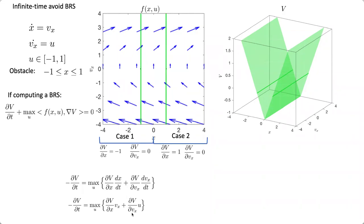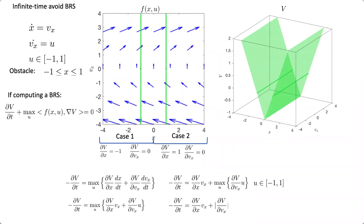Plugging in, we maximize over the control u — the inner product of the flow field with the gradients. For this case dx/dt is velocity and dv/dt is the input acceleration. We pull out terms that don't depend on control. Since control is bounded between −1 and 1, we always pull out the absolute value of the gradient in the velocity direction. This gives the update equation for the first time step: value change is the gradient in x times velocity plus the absolute value of the gradient in velocity.